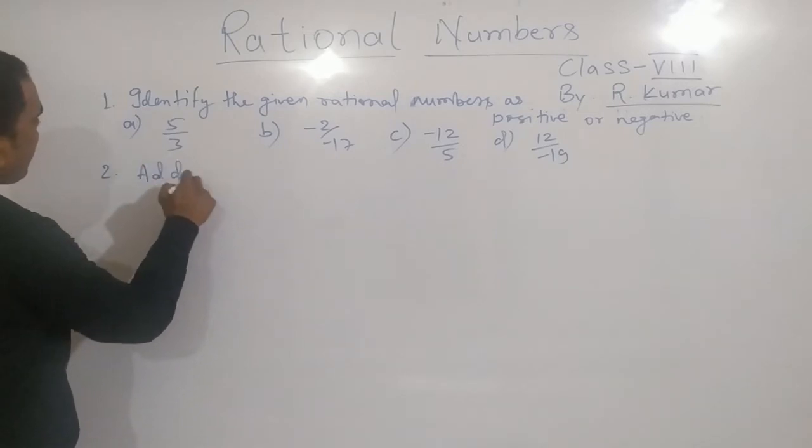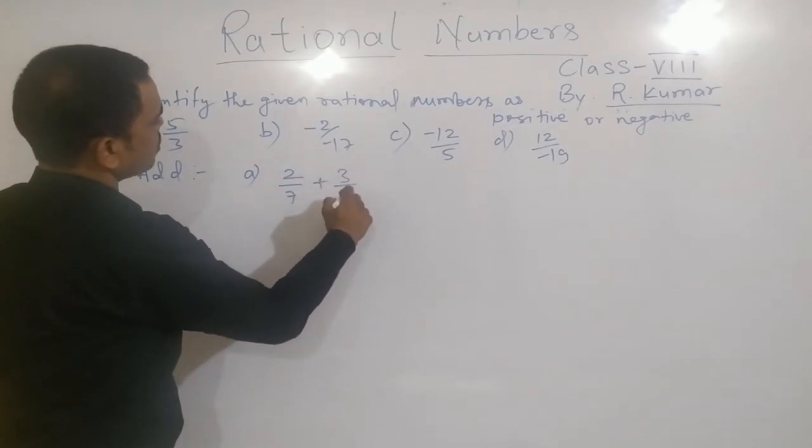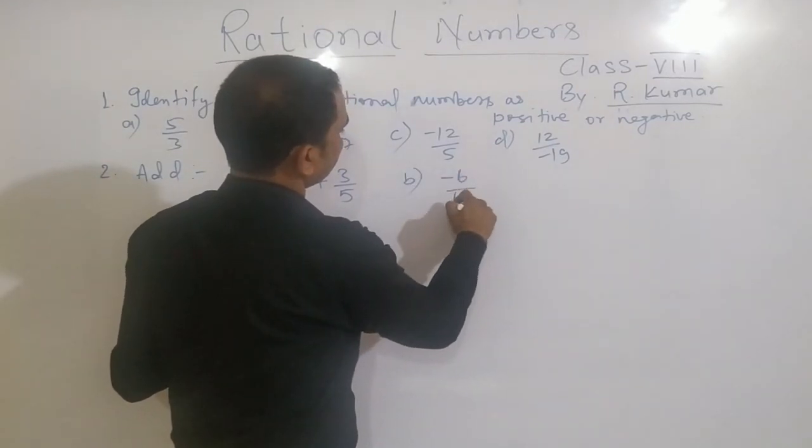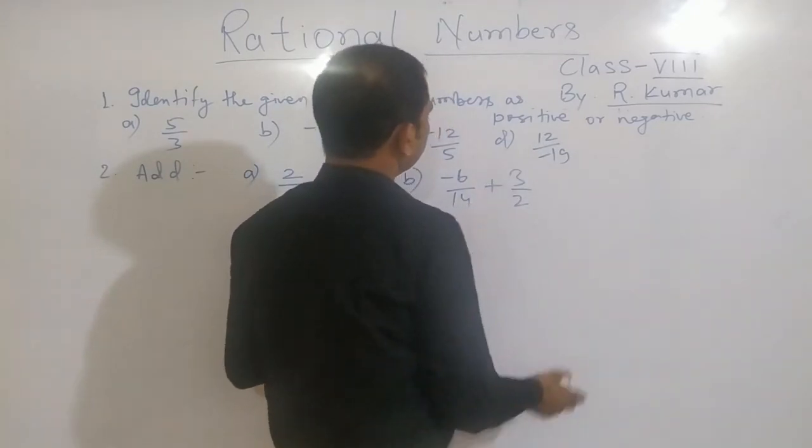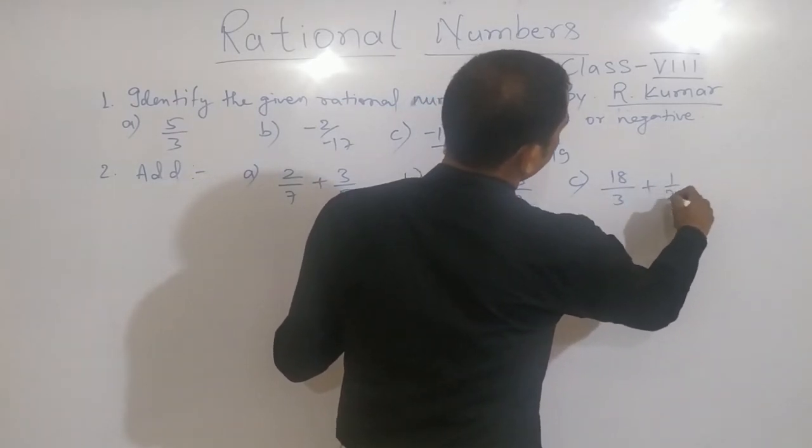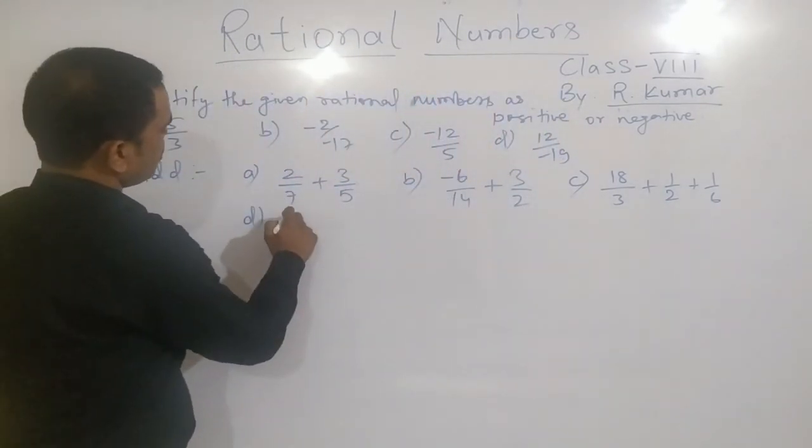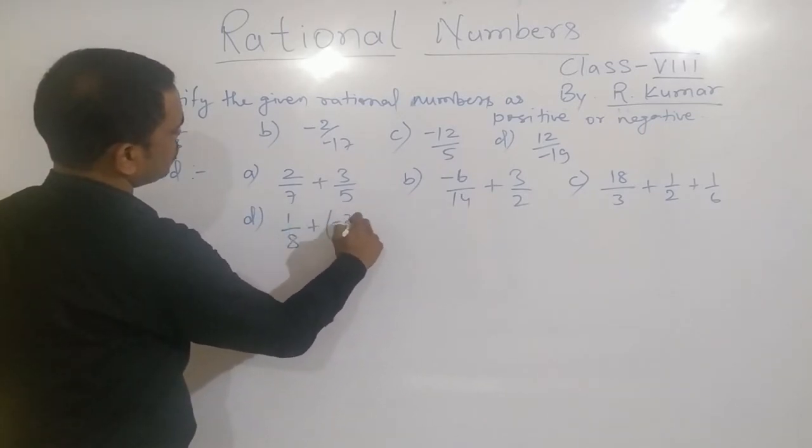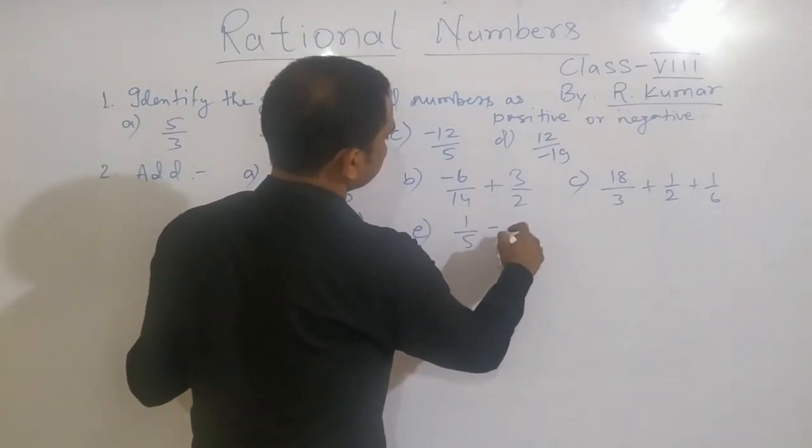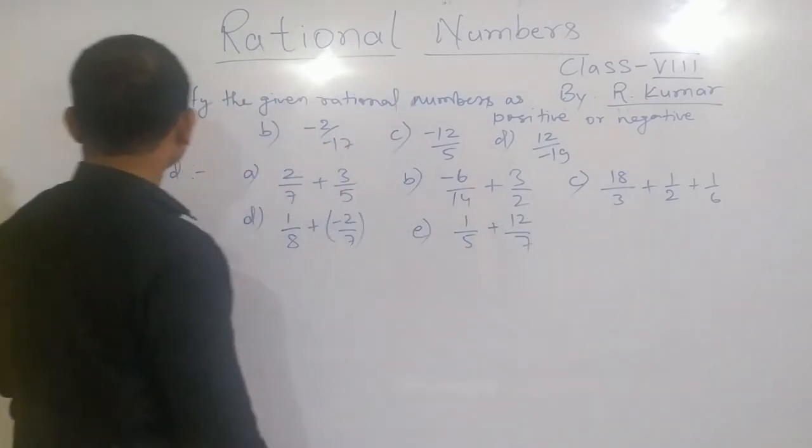Next question is you have to add: A, 2 by 7 plus 3 by 5. B, minus 6 by 14 plus 3 by 2. C, 18 by 3 plus 1 by 2 plus 1 by 6. D, 1 by 8 plus minus 2 by 7. E, 1 by 5 plus 12 by 7. So these 5 you have to add.